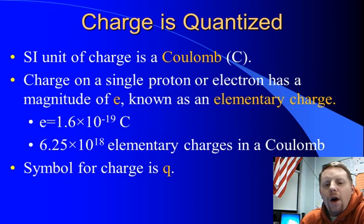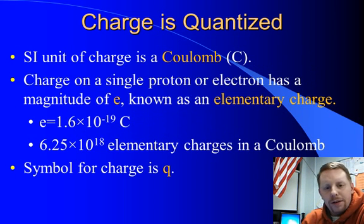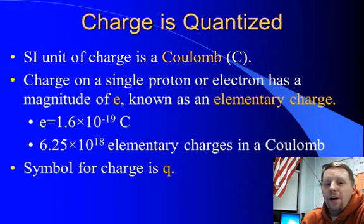Now charge is quantized. That means it comes in discrete amounts. There is the smallest possible charge you can deal with. The metric unit, or SI unit of charge, is known as a coulomb. We abbreviate that with a capital C. You need to know a coulomb is an awfully large amount of charge. Typically we deal with things much smaller than a full coulomb, things like micro coulombs and nano coulombs.